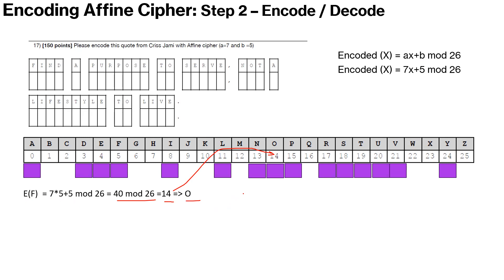Similarly, we'll go on and start encoding I. So I is the eighth alphabet or the numeric value is 8. So we go ahead and 7 times 8 plus 5 mod 26, which is 61 mod 26, which is 9. 2 times 26 is 52, 61 minus 52 is 9. So that ninth is J. So I becomes J. So we will go ahead and type in J out here.